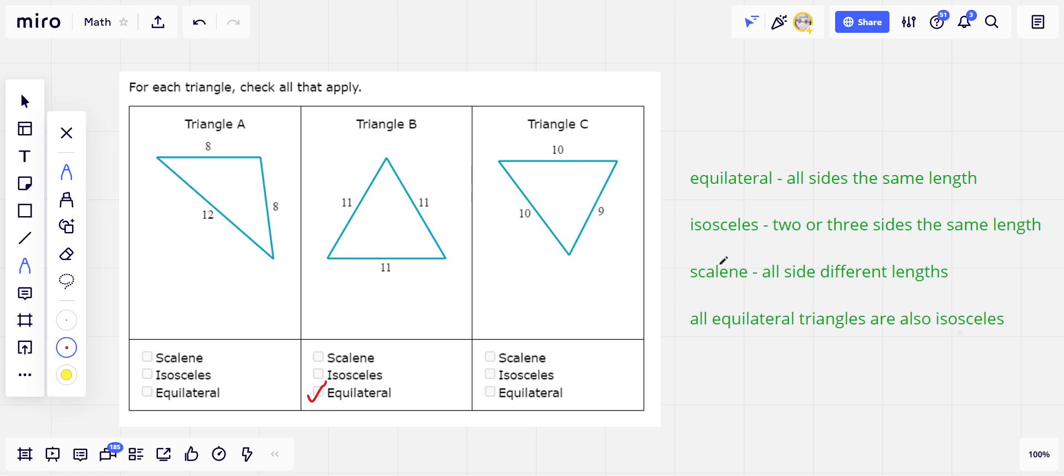Another type is isosceles. So these words come from the Greek. That's why they look a little funny to us. Isosceles triangle is one that has two sides or three sides because really isosceles means it has two sides the same length.